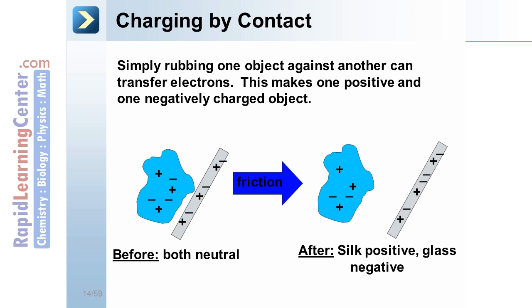Afterwards, you may note that the silk is now positive, has one less negative charge, and the rod has one extra negative charge.